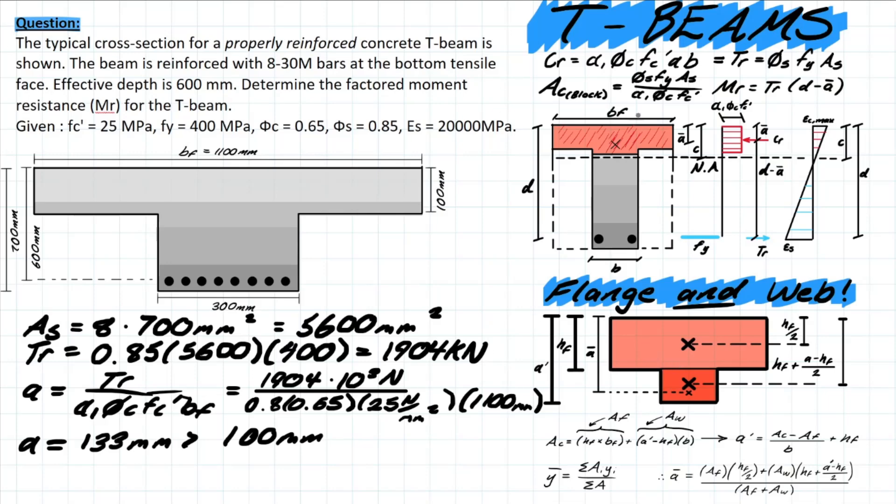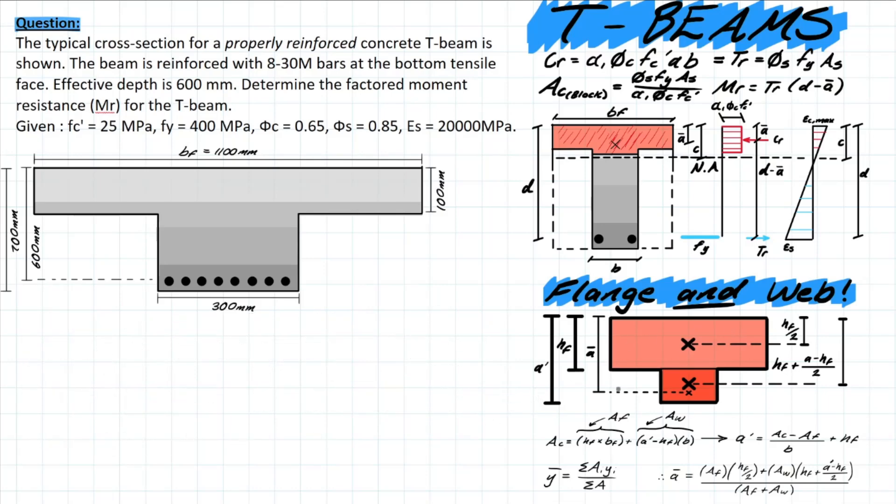We have to figure out some new values to determine where this central location is in our compressive block. So let's figure out how we're going to do that by first solving for the required concrete area of this compressive block. This area of concrete is important because then we can start to determine what our a value would be for this respective area of concrete and then figure out what the centroidal axis would be located at for this composite shape.